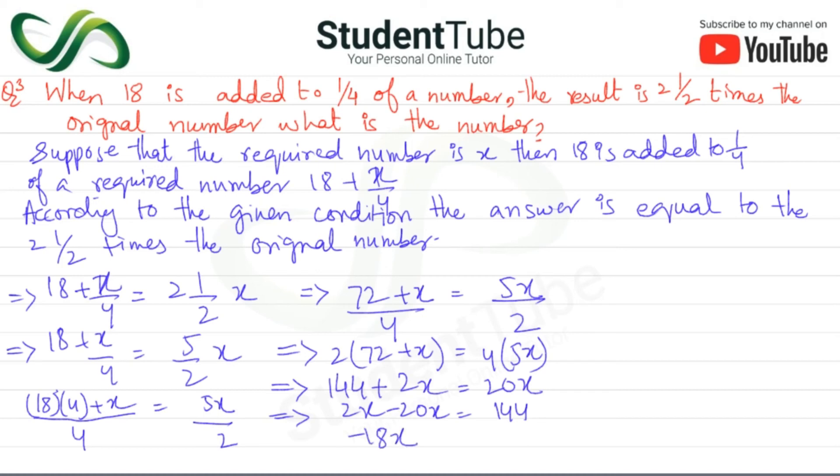Minus and minus cancel. So x is equal to 144 upon 18. Now divide this, the answer is 8.